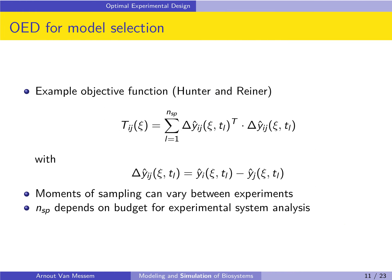An example of an objective function in this case is the objective function of Hunter and Reiner. You are comparing two models, model i and model j, for a given set of degrees of freedom ξ. To calculate the value of this objective function, you first look at the differences between model i and model j in all the different time points in which you are sampling. This difference is indicated by Δŷᵢⱼ, and nₛₚ indicates the total number of time points of sampling.